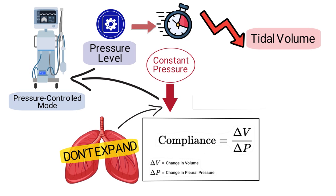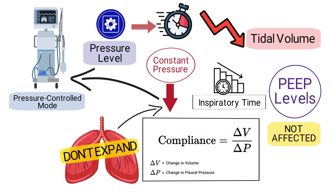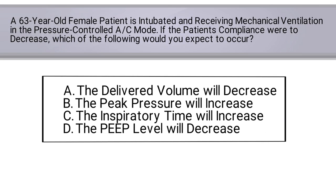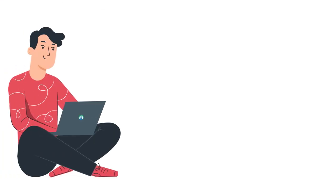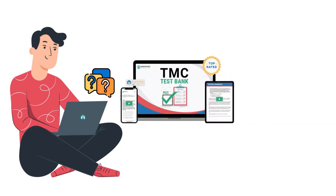Also in this case, the inspiratory time would decrease and the PEEP levels would not be affected. So by breaking down the question and all the answer choices, we can determine that the correct answer is A — the delivered volume will decrease.